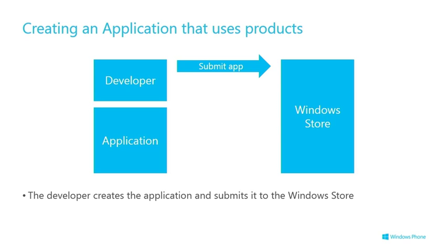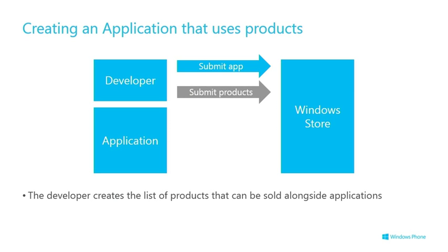This is a process we're going to go into in much more detail in the very next session, after our break — the whole Windows Phone Store submission process. You also need to upload a list of the product items you want to sell in your app to the store using your account on the Dev Center. During this process, you give each product a name, description, price, and define the countries where it can be sold. It's just a description — there's no digital item that you upload. You can then associate each in-app purchase product with an application.